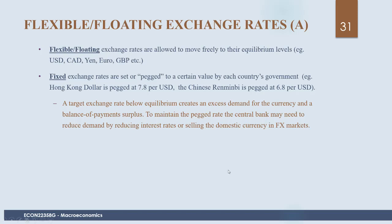A target exchange rate below the equilibrium creates excess demand for the currency and a balance of payments surplus. Similar to price floors and ceilings in microeconomics, a fixed exchange rate set by the government creates surpluses or shortages depending on where it is set relative to equilibrium. To maintain the pegged rate, the central bank may reduce interest rates or sell domestic currency in foreign exchange markets. If there is excess demand for the currency, there is a tendency for the exchange rate to rise, and the central bank supplies that excess demand — essentially creating new money by putting Canadian dollars into circulation, which could cause inflation.